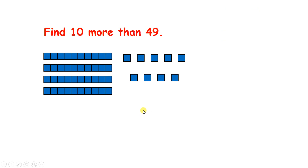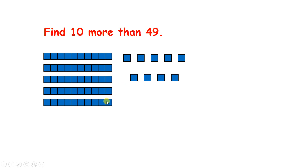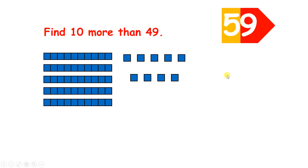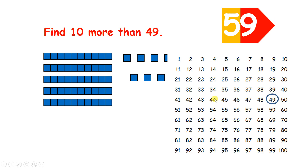So if we add 10 to 49, we still have nine units, but we now have five 10s, so we have 59. And on a 100 square, to find 10 more, we move one place down.